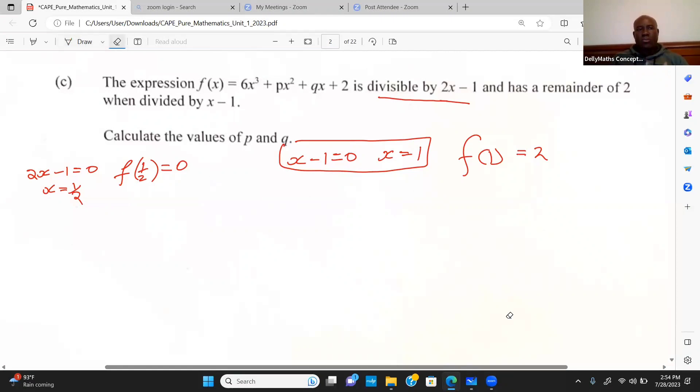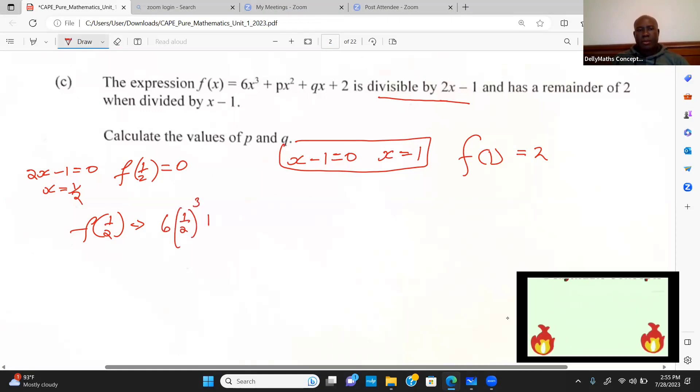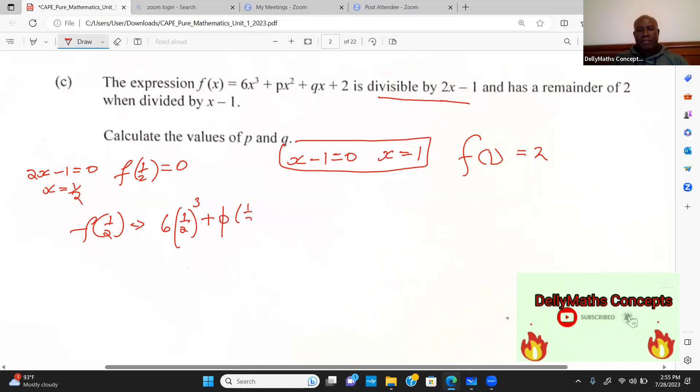Let us proceed by looking at f of a half. I'm going to evaluate f of a half. We're going to have 6 times a half raised to the third plus p times a half squared plus q times a half, and this is plus 2. And this should equal 0.